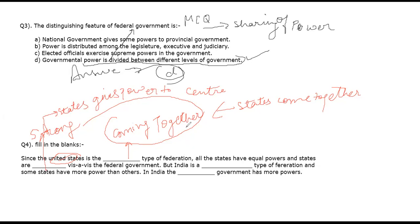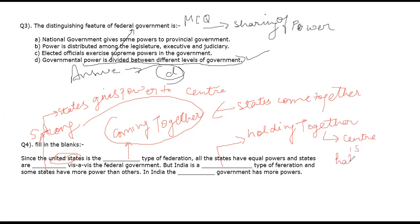The next sentence is about India. India is a 'holding together' type of Federation. This means the central government is holding all the states together. The Indian constitution is designed in such a way that it gives power to the center to manage the functioning of the states. The states are held together by the central government. So the Indian Federation is 'holding together.'